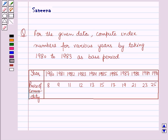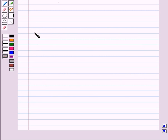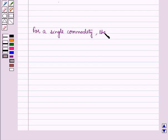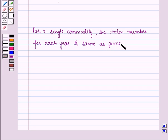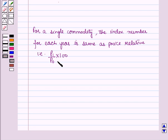Before starting the solution of this question we should know a key result: for a single commodity, the index number for each year is the same as the price relative, that is P1 over P0 into 100, where P1 denotes the current prices and P0 denotes the base year prices of the given commodity.